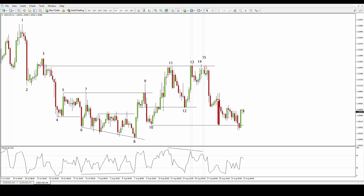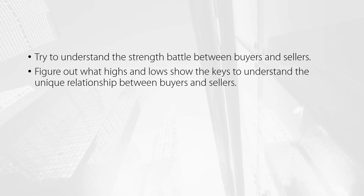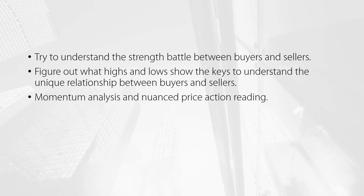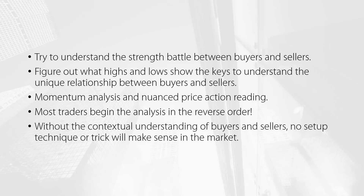Our short trade idea was clearly successful as you can see in the chart. To quickly sum up the elements of our contextual analysis: first, we must approach the market to understand the different levels of strength between buyers and sellers by analyzing highs and lows and subjectively comparing the volatility of market vectors. Second, we must figure out which of these highs and lows show the keys to understanding the battle between buyers and sellers. Third, we can employ momentum analysis and refined candlestick reading of subtle nuances in price action to collect logically consistent elements for a trade idea. Notice that most traders usually start the analysis with the last element — looking for a specific trigger point or trick — and this is clearly a mistake, because without subjectively understanding what's going on between buyers and sellers, you simply cannot make sense of any setup technique.